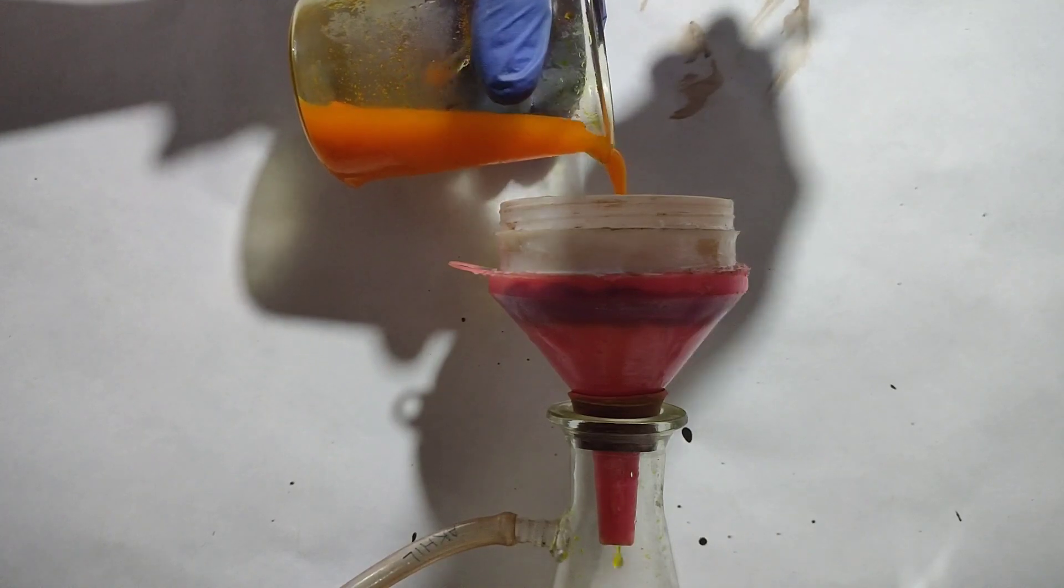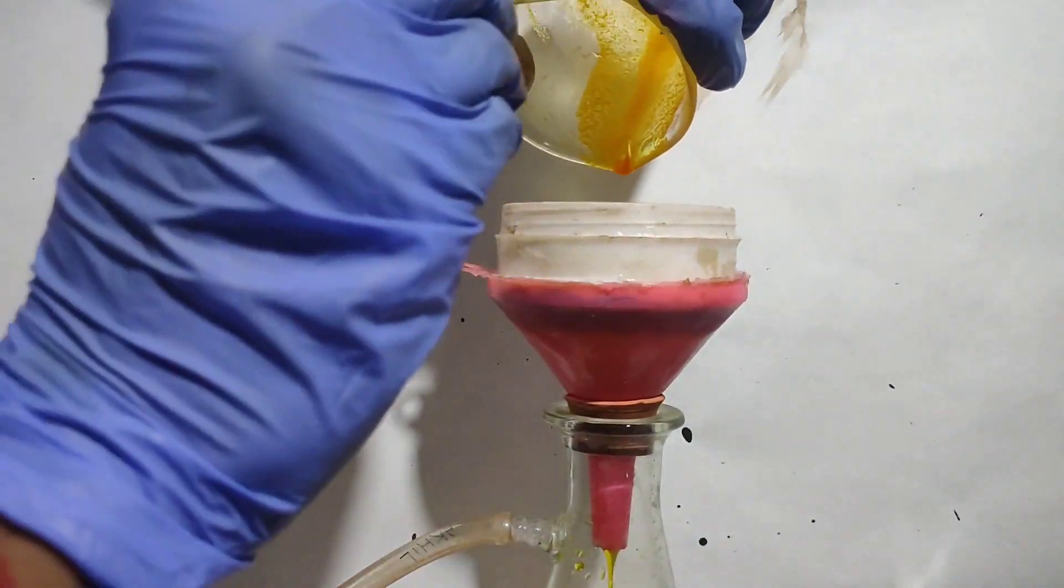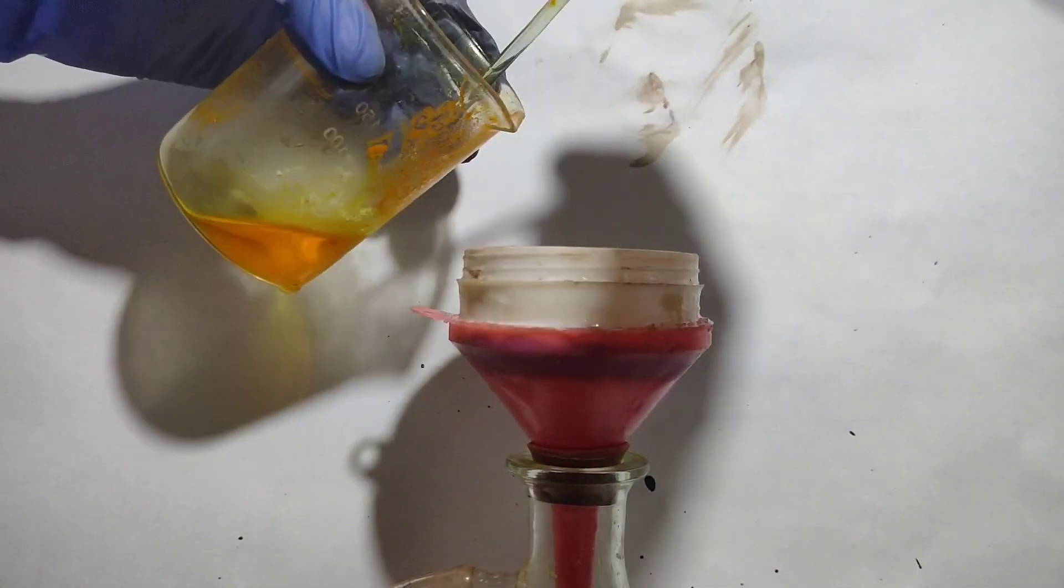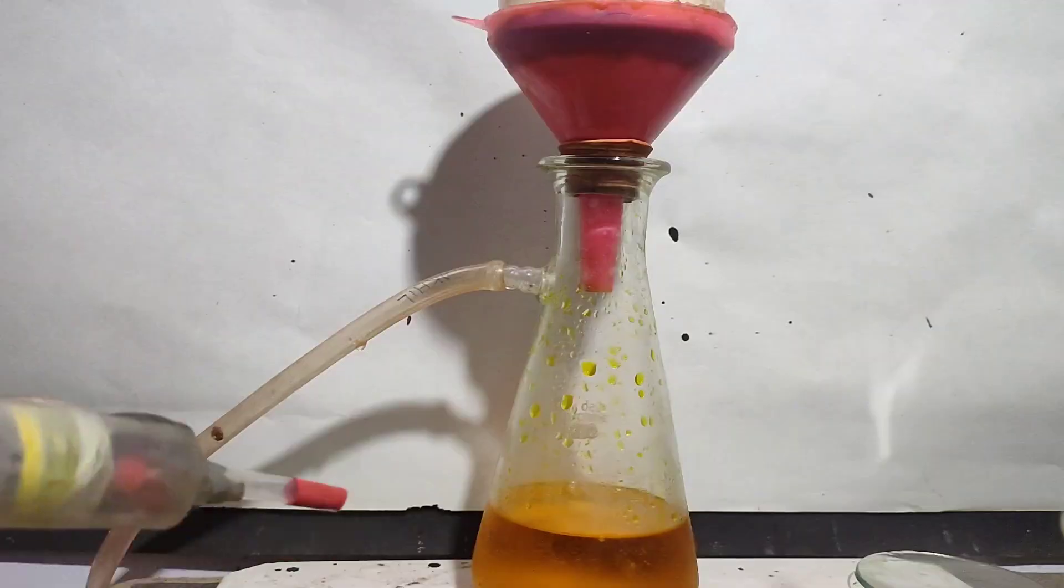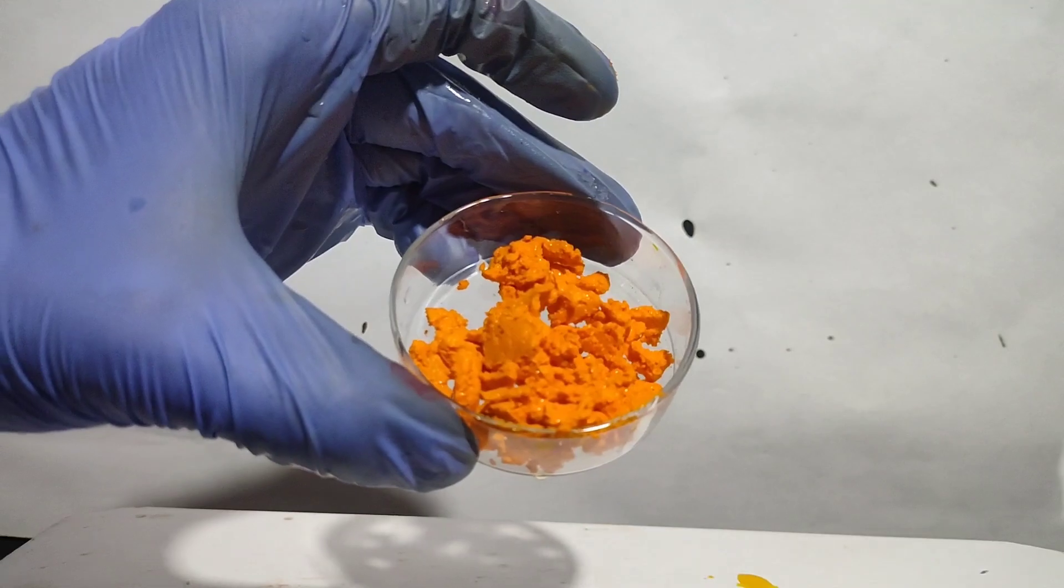I filtered these crystals on my Buchner funnel on vacuum filtration and washed the crystals with ice cold distilled water. Then I took out the crystals with a spatula in a pre-weight petri dish and dried these crystals in a desiccator for 2 days.